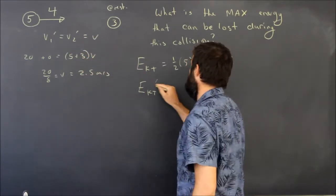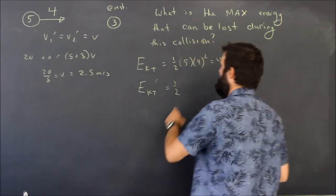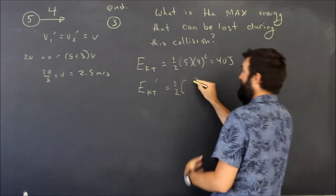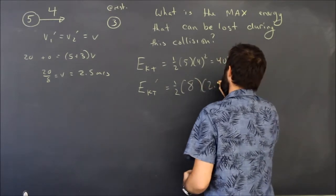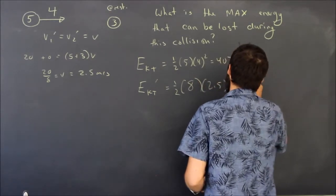If they are both traveling at 2.5, then their kinetic energy is a half times the mass of both of them, because they're both moving, which is 8 times 2.5 squared, and that's 25 joules.